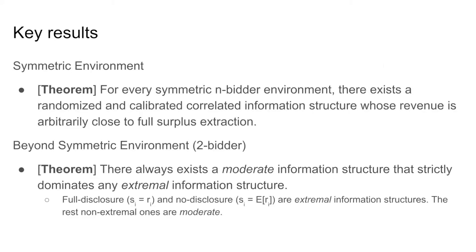Our main results can be summarized by two theorems. The first theorem is for symmetric environments with general n-bidder cases, which says that the seller can get arbitrarily close to full surplus extraction, hence also arbitrarily close to full social efficiency. The second theorem goes beyond the symmetric environment, limited to two-bidder cases, and says that except for trivial degenerate cases, there always exists a moderate information structure that strictly outperforms all extremal information structures. An information structure is extremal if it either does full disclosure for all bidders or does no disclosure for all bidders; any structure that is not extremal is called moderate.